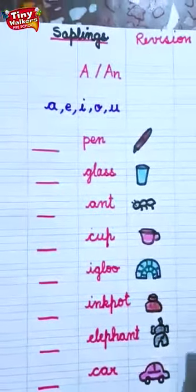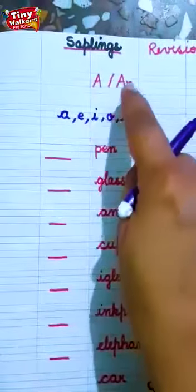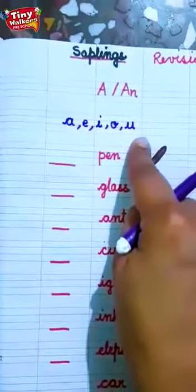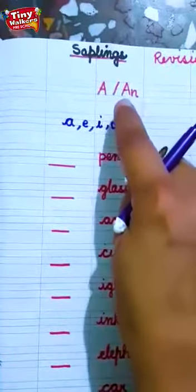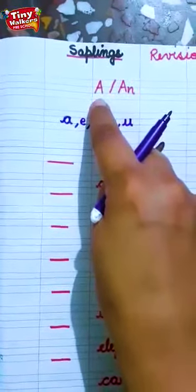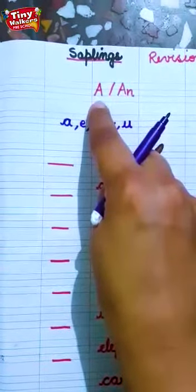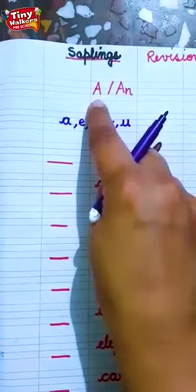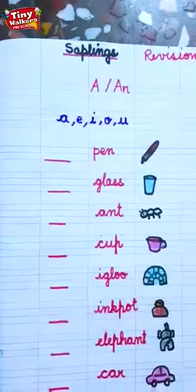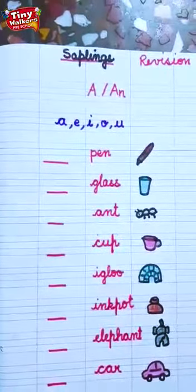So children, we write An with vowel sounds. Jo vowel sounds hote hai, unke saath humne An likhna hai. And we use A for consonants. Thik hai? Consonants ke saath humne kya lagana hai? A. So today we are going to do A or An.